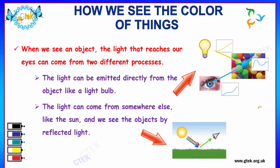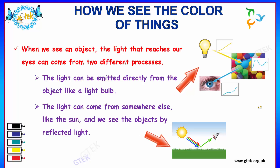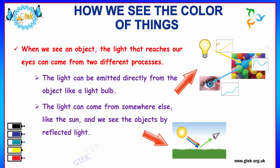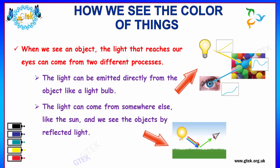There is another question: how do we see the color of things? When we see an object, the light that reaches our eyes can come from two different processes. The first is that light can be emitted directly from the object, like a light bulb. The other process is that light can come from somewhere else, like the sun, and we see objects by reflected light.